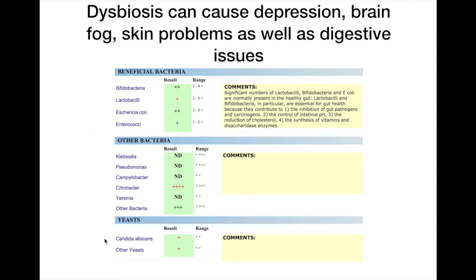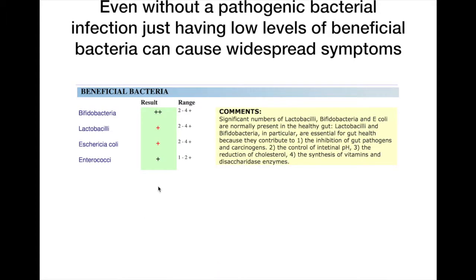Here's an example showing an overgrowth of both candida and citrobacter, along with low levels of beneficial bacteria. Further on in the test it will show exactly what those other bacteria are. Here's another example of very low levels of beneficial bacteria — even if you have no pathogenic bacteria, just having low levels of beneficial bacteria will cause widespread digestion and other health symptoms.